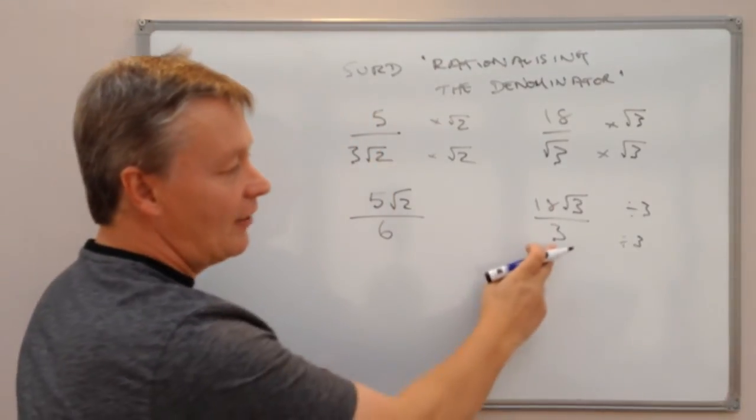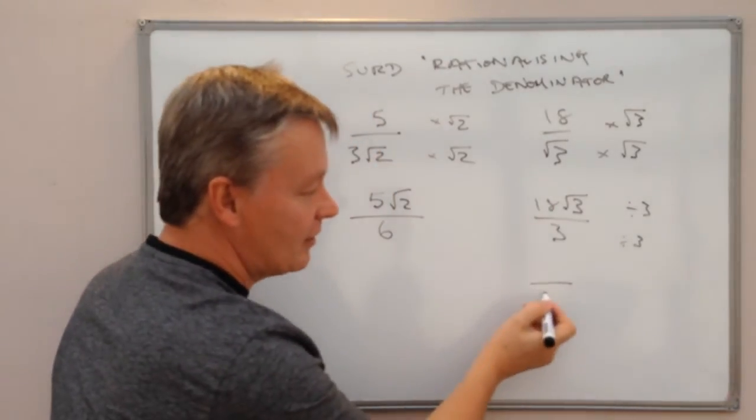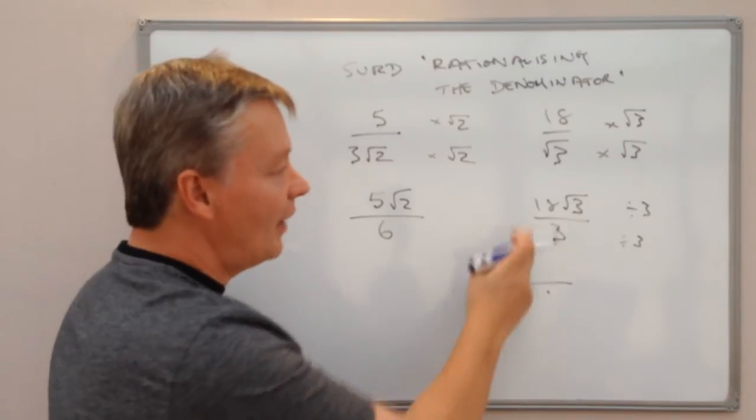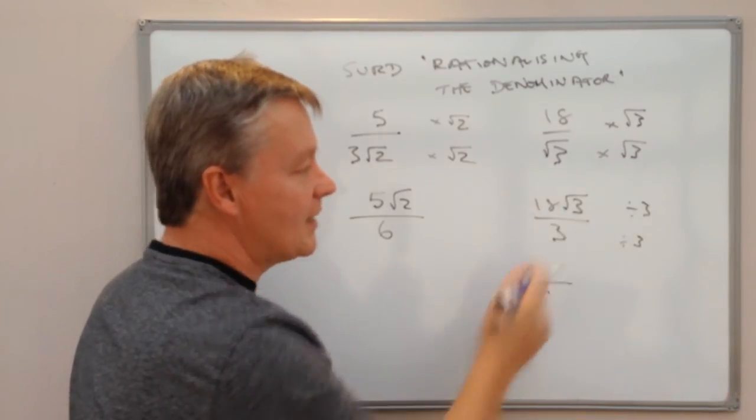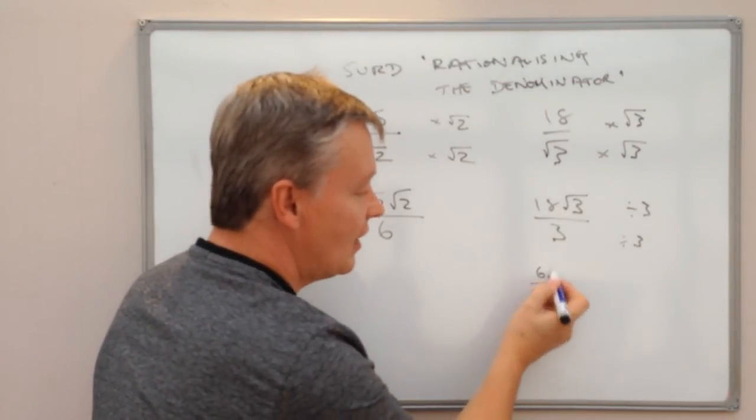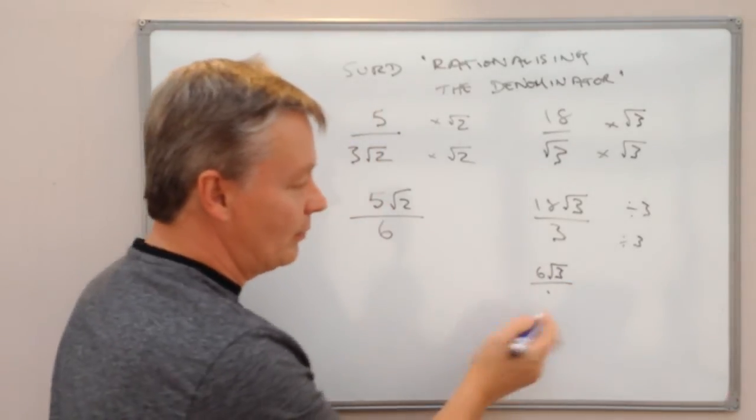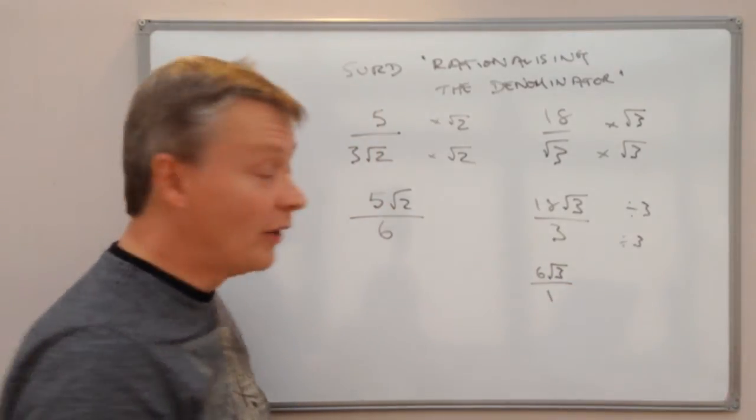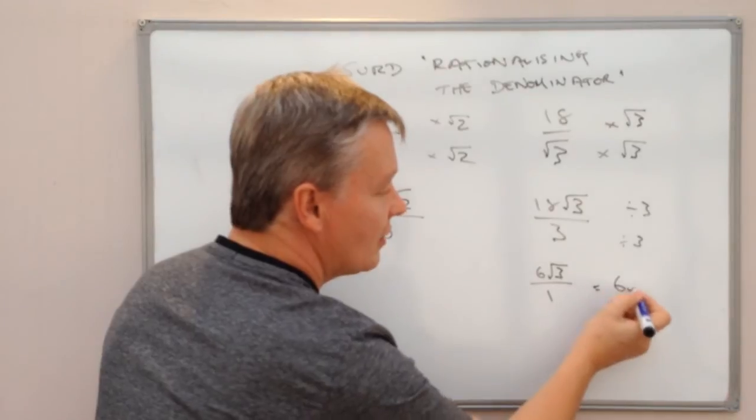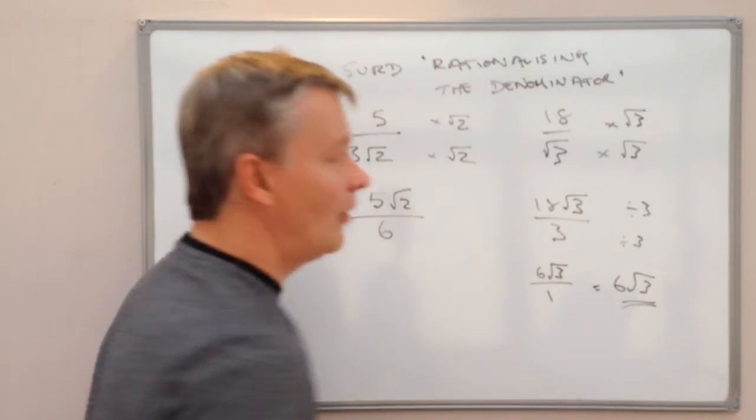And the top divided by 3 I've got 18 divided by 3 is 6. So the answer to this question will be 6 root 3 over 1 or 6 root 3 on its own.